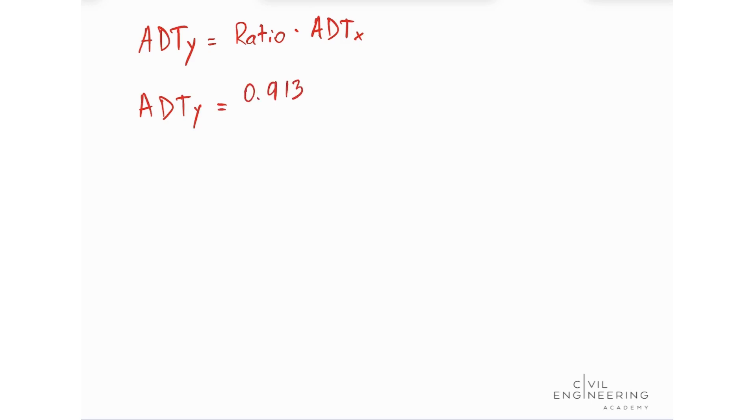And now we can estimate our average daily traffic for street Y, which is going to be the ratio that we calculated times our average daily traffic for street X. So our ADT Y is going to be 0.913 times 9,518.57. We're going to find out that our average daily traffic for street Y is 8,693.07, which gives us the correct answer as alternative B.